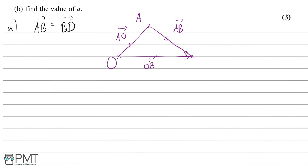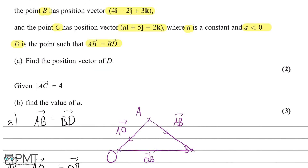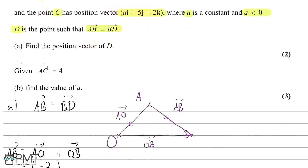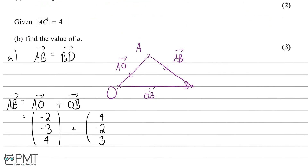AB is the same as AO plus OB. AO is simply the reverse of the position vector of A — going from O to A gives us A, so going from A to O gives us its negative. So AO is minus 2i minus 3j plus 4k. OB is just the position vector B, which is 4i minus 2j plus 3k. Adding these together: minus 2 plus 4 gives 2, minus 3 minus 2 gives minus 5, and 4 plus 3 gives 7. So AB is (2, −5, 7).